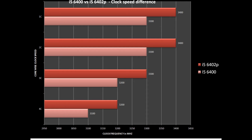But this difference doesn't end here. In this graph, you can see the turbo boosted clock speeds of these two models with respect to the number of cores used. The 6402P self-overclocks at 3200 MHz when all four cores are in demand. It runs significantly higher at 3400 MHz in both single and dual-core modes. So if you involve the 6402P in a program that only uses two cores, it performs slightly better than the 6400 due to the clock speed advantage.